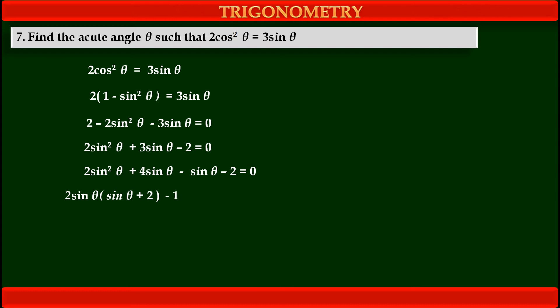Similarly, by taking common factor from last two terms, since there is no common factor, so we can take -1 common. So, by taking -1 common, we get in bracket sinθ + 2 = 0 in the right hand side as it is.